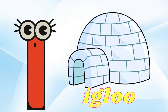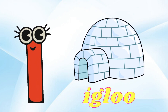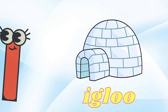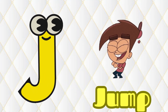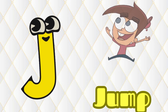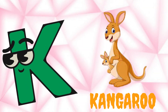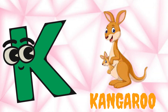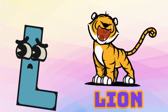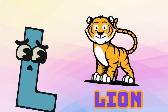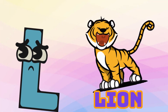I is for Igloo, I-I-Igloo. J is for Jump, J-J-Jump. K is for Kangaroo, K-K-Kangaroo. L is for Lion, L-L-Lion.